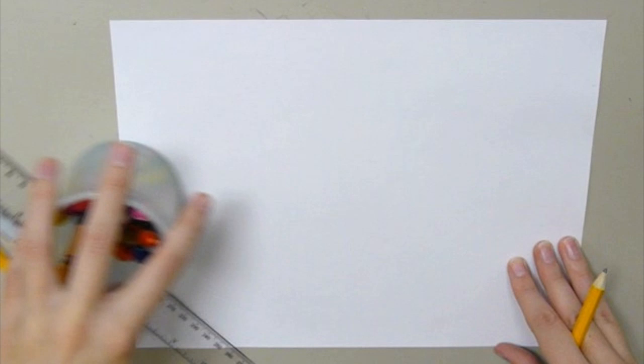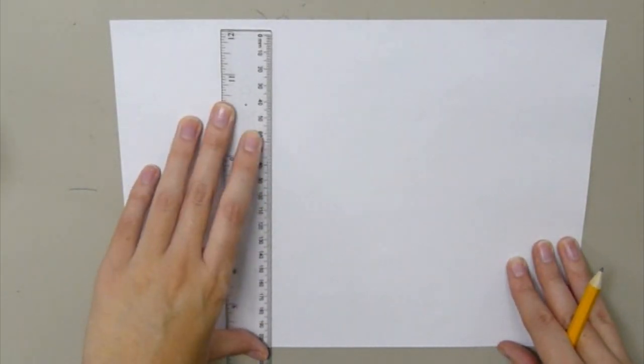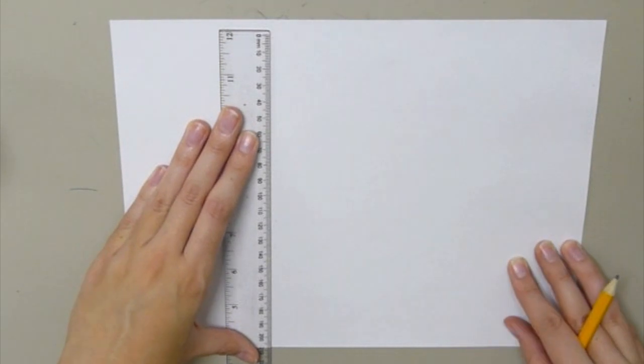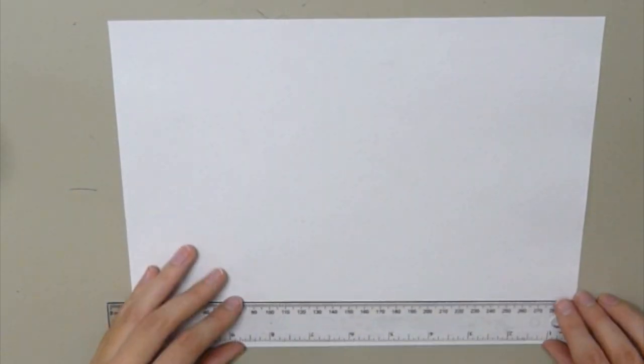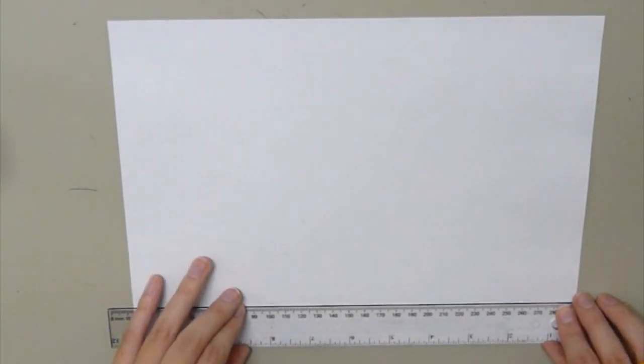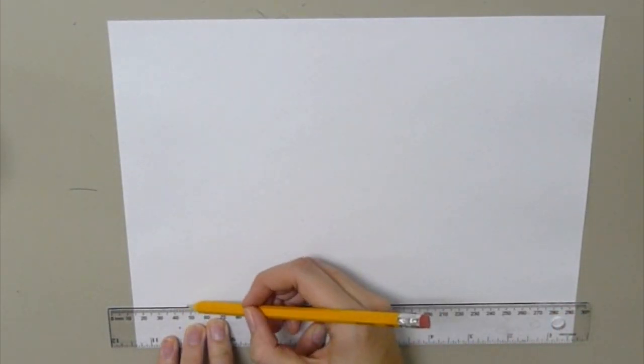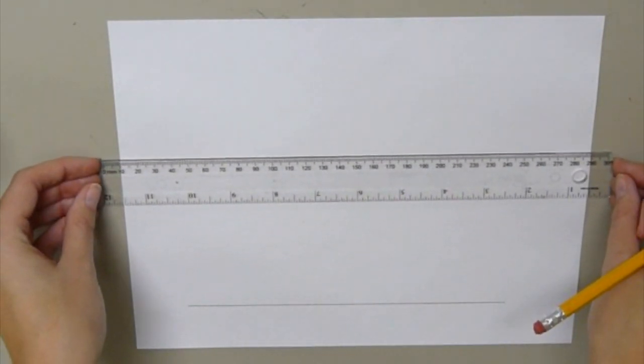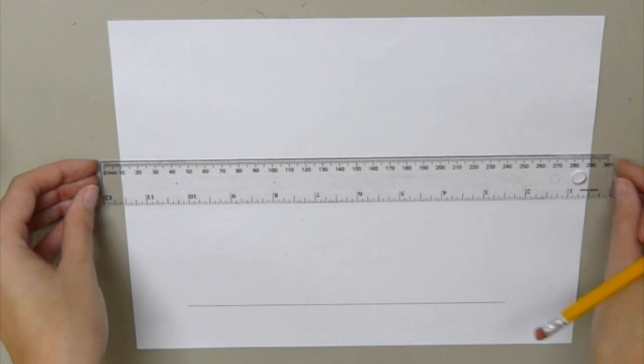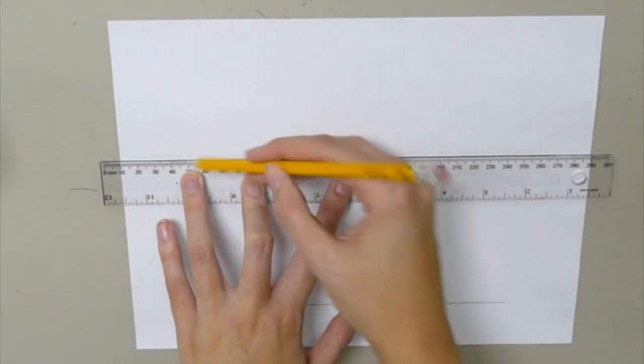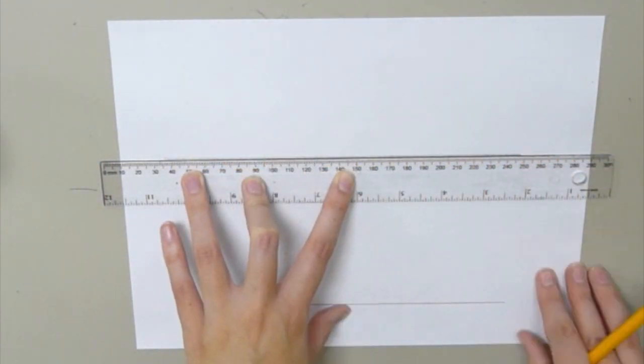The first thing that we're going to do is take our ruler and draw a square. I'm going to line up my ruler to the bottom of my paper, and I'm going to draw a straight line. I'm going about in the middle, put my ruler, and I'm going to draw a straight line again.